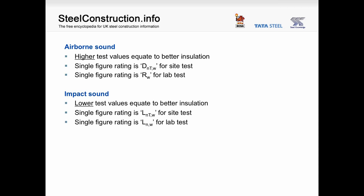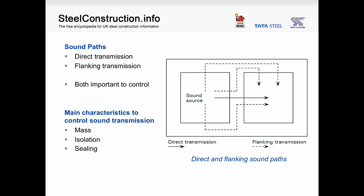There are different terms used depending on whether the measurement has been taken on-site or in a laboratory. For airborne sound, the single-figure rating is DnTW for site tests and RW for lab results. For impact sound, the site test is termed LnTW and the lab result is LnW. Sound insulation in buildings needs to consider different sound paths: the most obvious is direct sound transmission — for example, directly through a wall — but also flanking transmission, which goes around the separating element. It is important that both paths are considered in detailing.